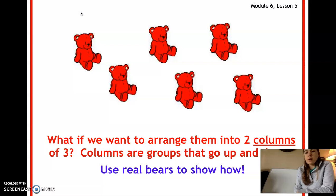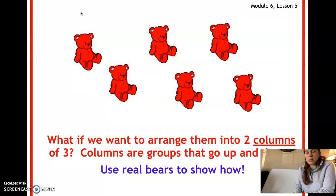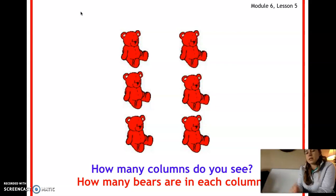What if we want to arrange them into two columns of three? Remember, columns are groups that go up and down. Use your objects at home and put them into two columns — a straight line going up and down. Use just the six objects you have right now. Pause the video and when you're ready play it and I'll show you the answer. How many columns do you see? I see two columns, and there are three bears in each column. If you got that right, give a silent cheer — nice job!